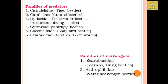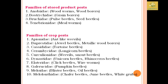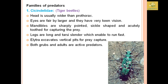Families will be classified based on predators, scavengers, stored products, and crop pests. The first predator family is Cicindelidae, comprising tiger beetles. They have a wide prothorax and the head is distinctly wider than the prothorax, with fair and large eyes giving keen vision. The mandibles are short and pointed, legs are long and tarsi slender enabling fast running. The larvae excavate vertical pits to capture prey, and both grubs and adults are active predators.